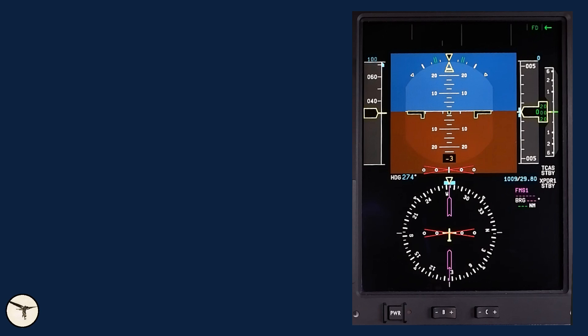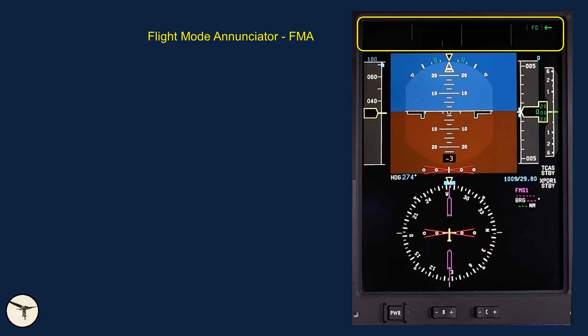This is the PFD on the captain's side when the aircraft is powered up. The PFD is divided into the following areas. On the top is the Flight Mode Annunciator. The panel informs the pilots about every change in the flight director modes, the status of the autopilot and more. Every change is announced by the pilot flying.